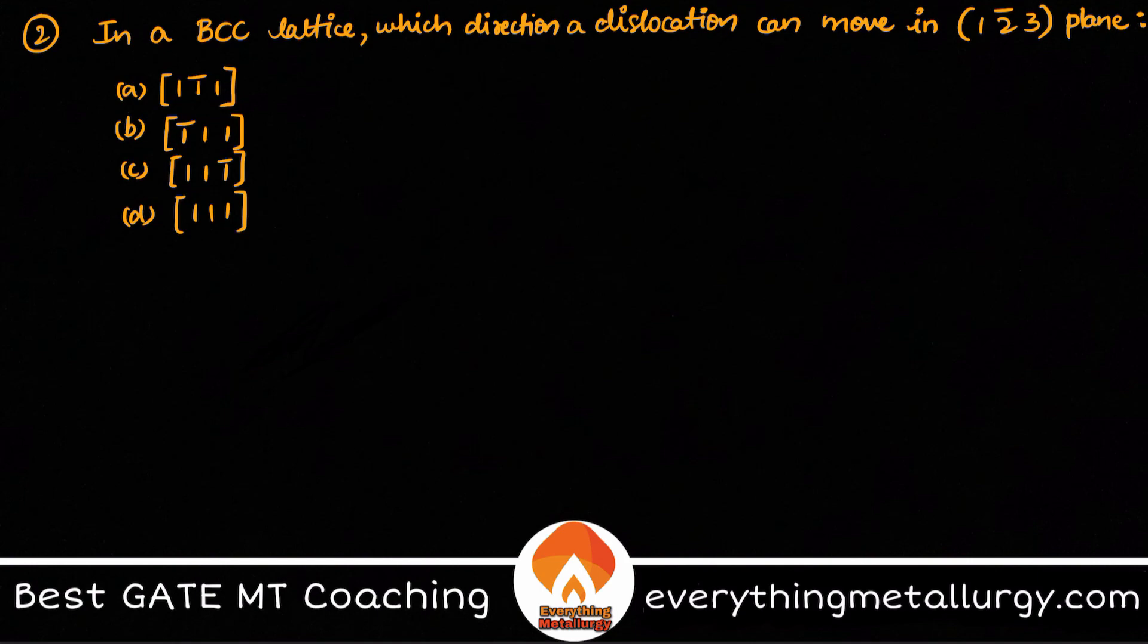Now the question goes like this: In a BCC lattice, which direction a dislocation can move in a given plane (1 2̄ 3), and we have got four options. Always remember, they are asking us what is that you need to find out. You need to find out the direction in which a dislocation can move, and they gave the plane in which the dislocation is moving.